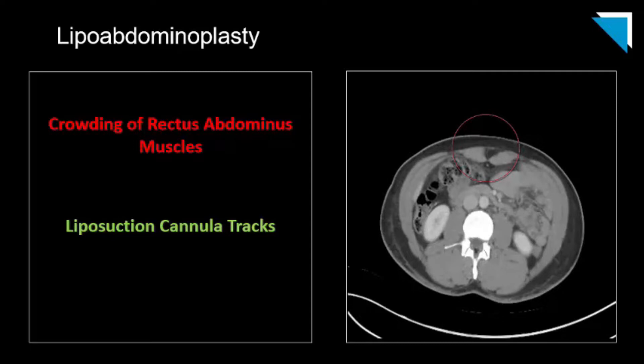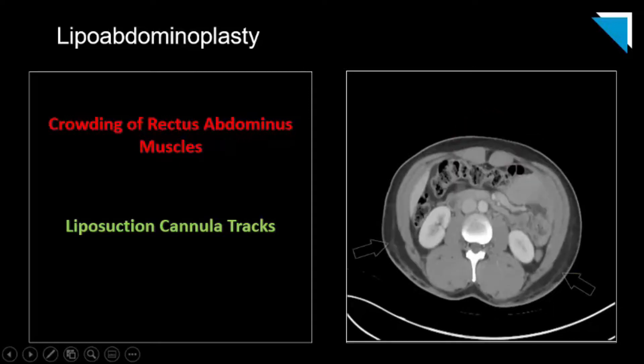The midline crowding of the rectus abdominis muscles is the imaging giveaway that the patient has undergone the procedure. The red circle shows the typical midline crowding of the rectus abdominis muscles, and the green arrows demonstrate the liposuction cannula tracts.